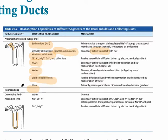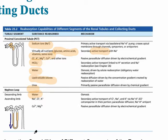Looking at the nephron loop, also called the loop of Henle, during the descending limb this is where water is reabsorbed. So as the fluid travels to the hairpin turn of the nephron loop, the fluid becomes more and more concentrated. Then in the ascending limb, this is going to be impermeable to water, and for that reason the water concentration returns to basically the same level as in the proximal and distal convoluted tubule.